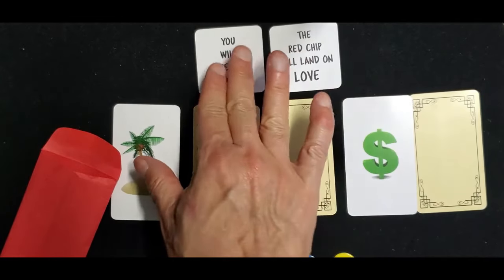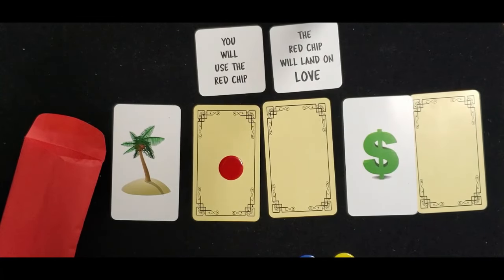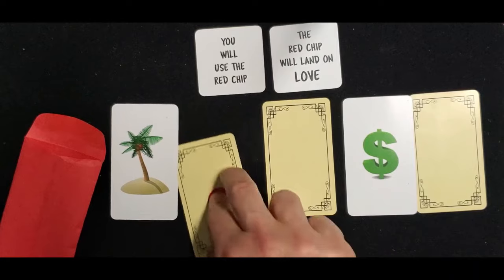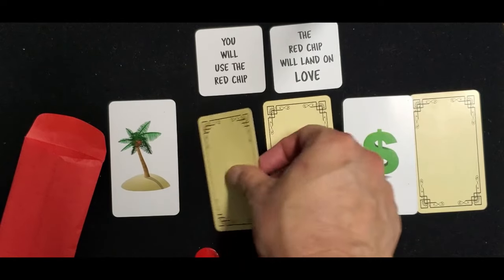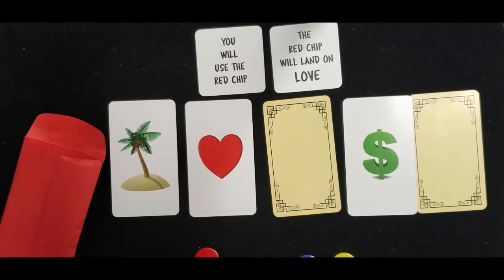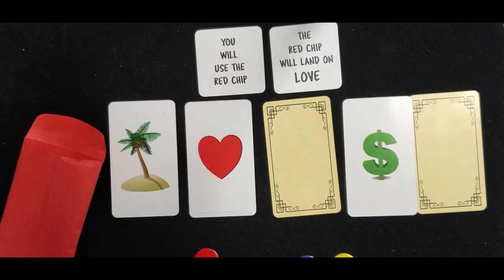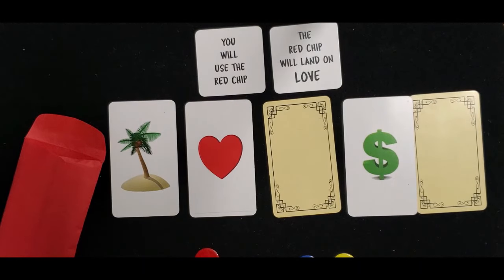The second message is now shown. The participant now slides the chip off and turns the card over. Despite all the decisions the participant made, this proves that all the decisions were under your control.